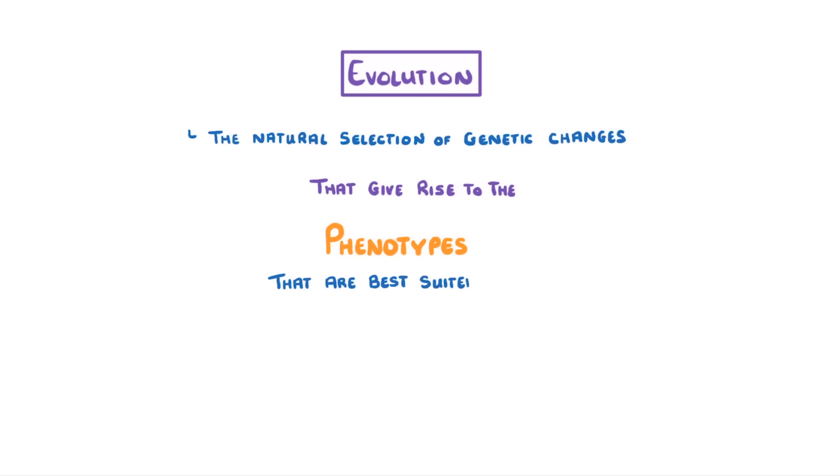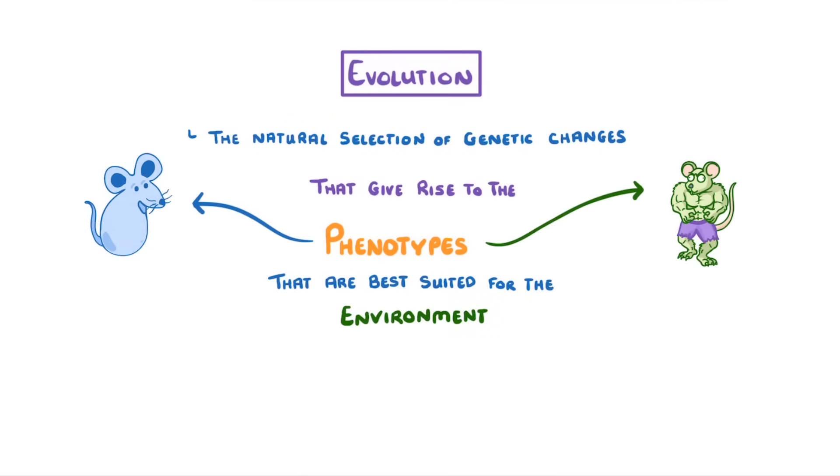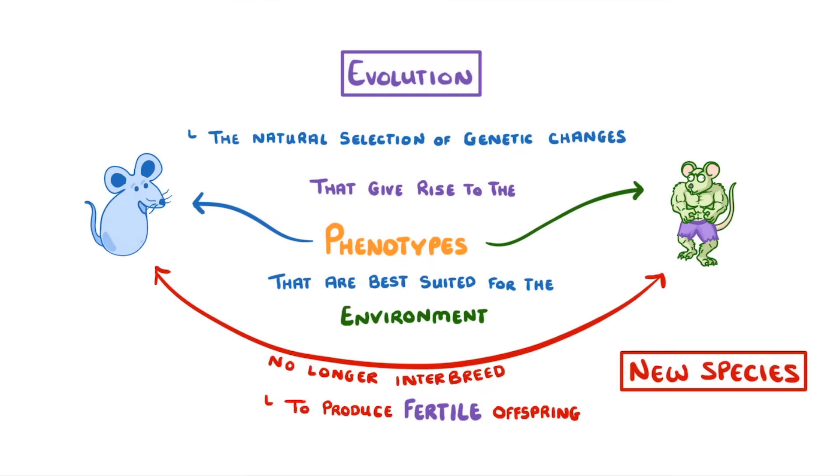So in summary, evolution occurs through natural selection of certain genetic changes that give rise to the phenotypes that are best suited to the environment. And given enough time, the phenotypes of two different populations within a species may become so different that they can no longer interbreed to produce fertile offspring, at which point we can say that a new species has been formed.